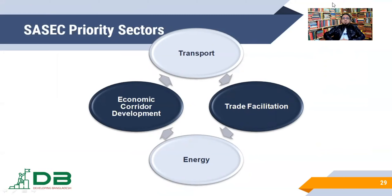Followed by trade facilitation. SASEC member countries agreed to facilitate trade by reducing documentation requirements, by automating processes, and by integrating standards and sanitary and other agencies among the governments. The third priority is energy sharing, including renewable energy. The fourth is economic corridor development for greater integration among the SASEC member countries. These four are the priority sectors to work with under SASEC.